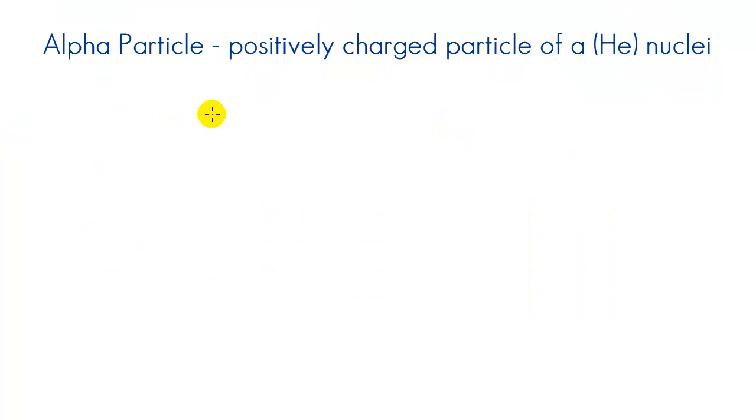So now let me talk to you guys about alpha particles or alpha emissions. Now if we look at the definition it says a positively charged particle of a helium nuclei. Now we know that helium always has two protons in its nucleus and also it has two neutrons. However, since this is positively charged, if we would draw this we would see that it would have zero electrons.